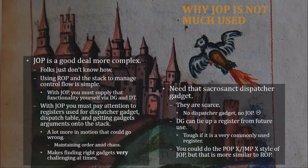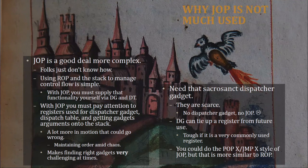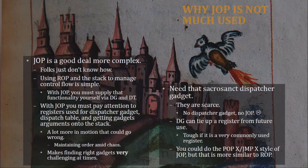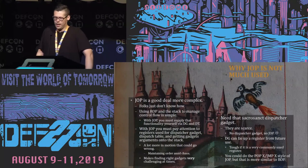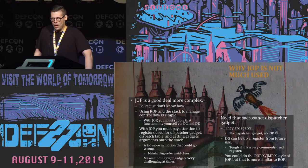JOP is a little bit more complex — folks still don't really know too much about it or how to use it, and that's understandable because there's not much written about it. If you try to search for articles on how to use it in Windows, you just won't find anything for the most part. With JOP you also have to pay attention to registers being used for the dispatcher gadget and dispatch table — if you tie those registers up you can't use them for other purposes, which adds to the complexity. The dispatcher gadget is also a very rare, very scarce gadget; if we can't find it we can't do the dispatcher gadget paradigm. You can still try the pop-EX jump-EX paradigm, or temporarily do ROP and then do a little bit of JOP.